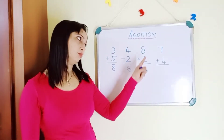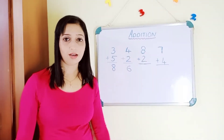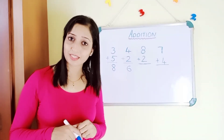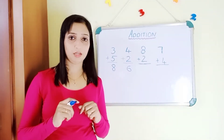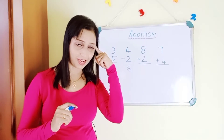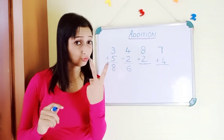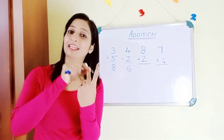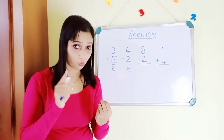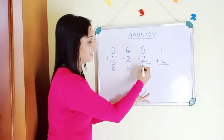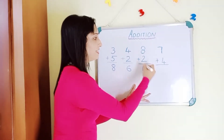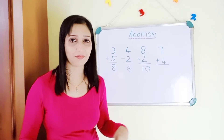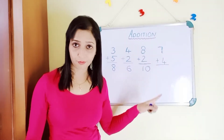One more example: eight plus two. Which is the bigger number? Eight. So eight in your mind and two in your hand. Count forward after eight: nine, ten. The answer is ten.